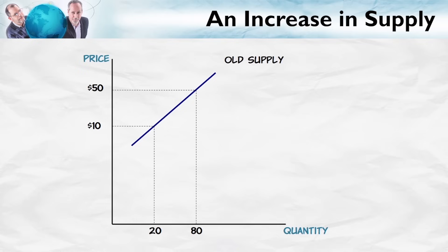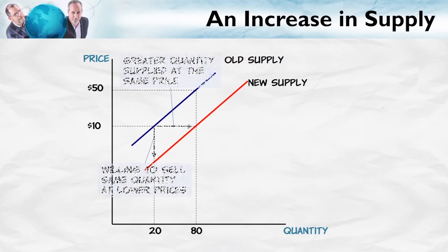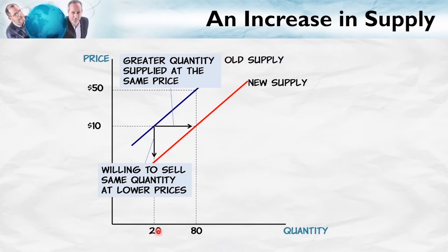What does that do to supply? It increases supply, and that means the supply curve moves down and to the right. An increase in supply means that for any given quantity, the firm is now willing to sell that quantity at a lower price than before. Since their costs have fallen, the minimum price that firms require to sell any quantity has decreased. Equivalently, at any price, now that their costs have fallen, the firms are willing to sell more. These genetically modified seeds have reduced cost and that increases supply.